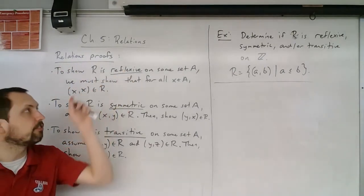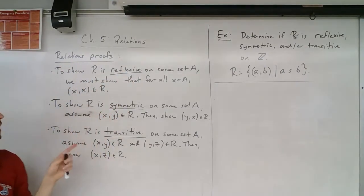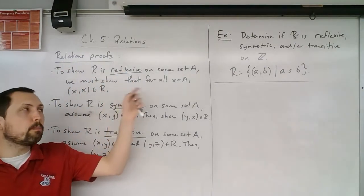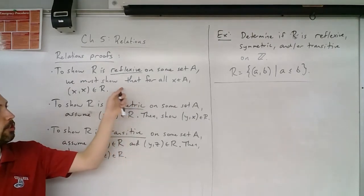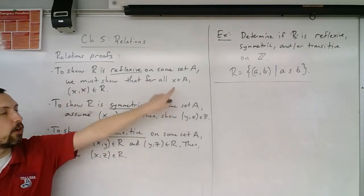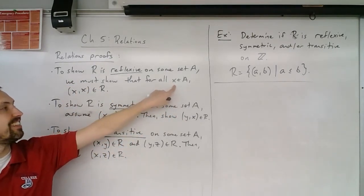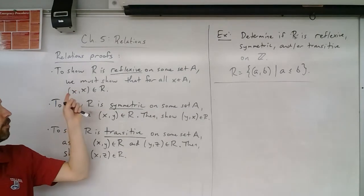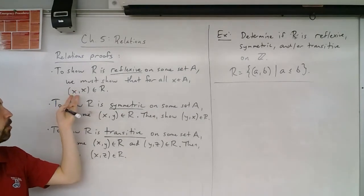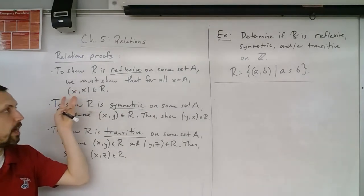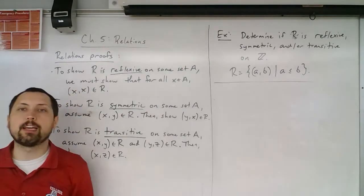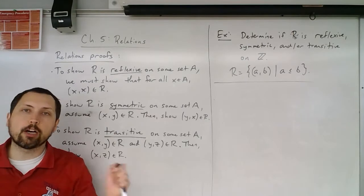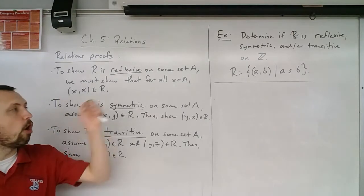To show that R is reflexive on a set, what we must prove is that for all elements x in the set, x is related to itself — that is, the ordered pair (x, x) is in our relation. You must show this for all elements.